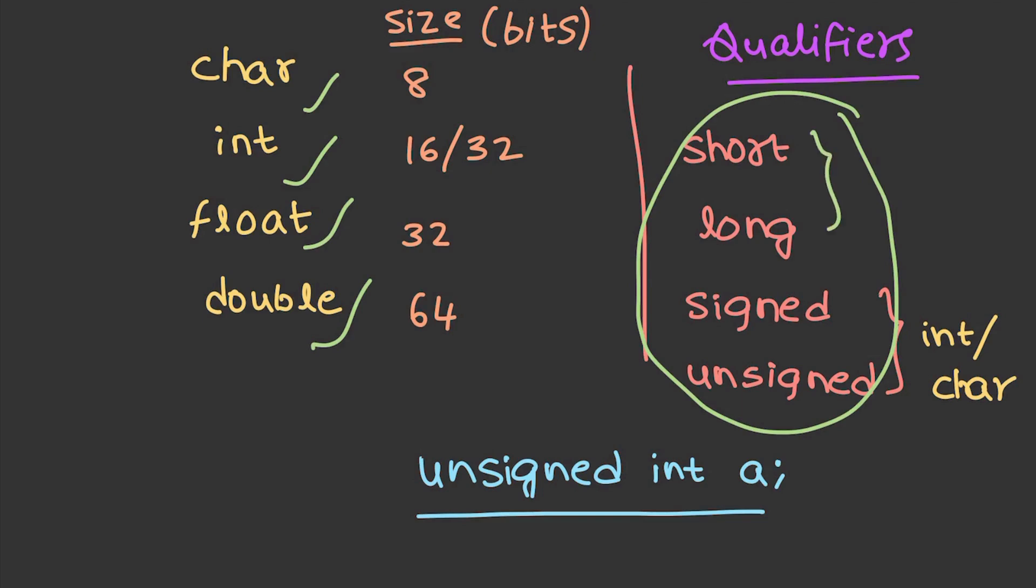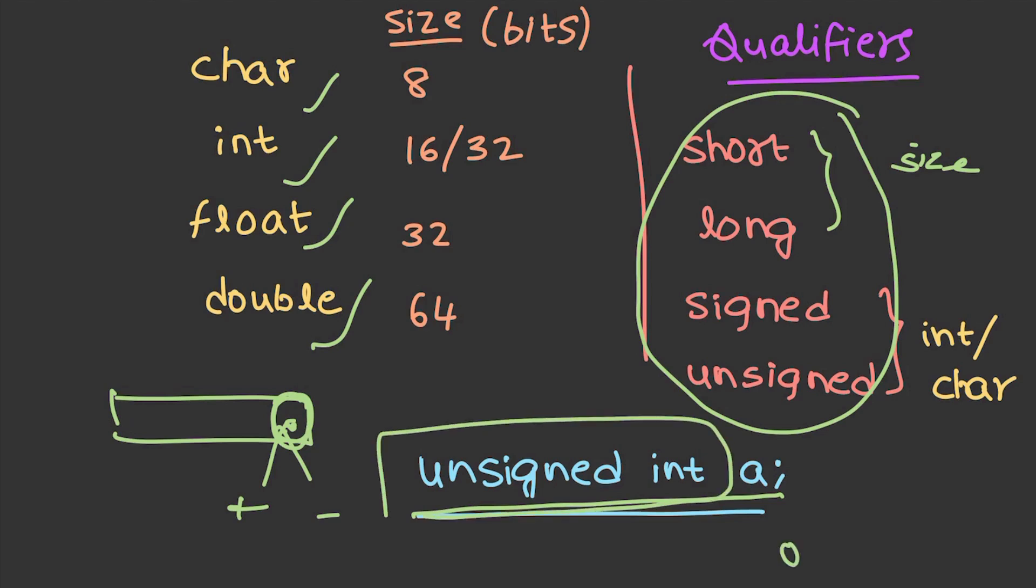Short and long can be used to change the size whereas signed and unsigned are helpful to identify whether the number is signed or unsigned. If you remember, while calculating the range of an integer, we have used the first bit to represent the positive or negative number. But in the case of unsigned integer a, if a value is declared like that, then we will not be using this for sign bit and we will be using even the first bit to associate the value. Then the range of unsigned int becomes 0 to 2 power 16 minus 1.